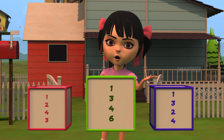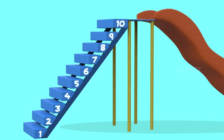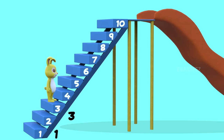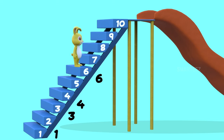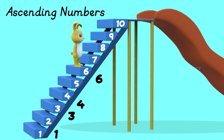Let's take a look. The bunny jumped from step 1 to step 3, then step 3 to step 4, and finally from step 4 to step 6. So, the numbers went 1, 3, 4, 6. Since the numbers are going up, we call them ascending numbers.